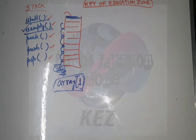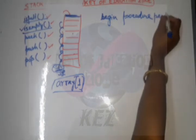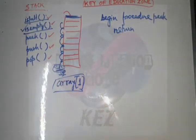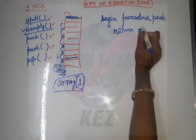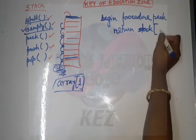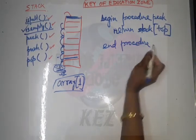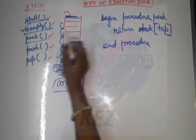For the peek function, it simply shows you the value at the current top position — you can only get data from there. The algorithm is: Begin Procedure peek. Return stack[top]. End procedure. So peek does not need to check is_full or is_empty; it just returns the top element. So is_full, is_empty, and peek are now clear.